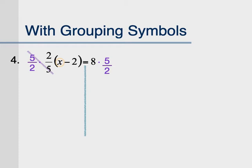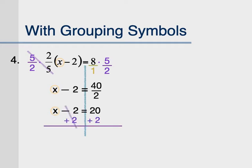The reciprocal of 2 over 5 is 5 over 2. Multiplying that by 2 over 5 cancels the 5s and the 2s — and whatever I do to one side of an equation, I must do to the other. On the other side where I have 8 times 5 over 2, rewrite 8 as 8 over 1, then multiply straight across: 8 times 5 is 40, all over 1 times 2 is 2. Simplify 40 over 2 to get 20. Now to get x all the way by itself, cancel out the minus 2 by doing the opposite once on each side to get your final answer.